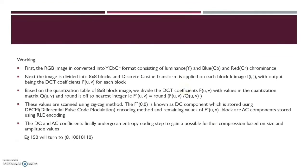Working: firstly, the RGB image is converted into YCbCr format, which consists of luminance, chroma blue and chroma red. Next, the image is divided into 8x8 blocks and discrete cosine transform is applied on each block to get f(u,v) for each block. Based on the quantization table, the 8x8 block DCT coefficient f(u,v) is divided by the values of the quantization matrix and rounded off to the nearest integer, receiving f-bar(u,v). These values are scanned using the zigzag method. The f-bar(0,0) is the DC component, stored using differential pulse code modulation encoding. The remaining values are AC components encoded using run length encoding. The DC and AC components finally undergo entropy coding to gain further compression based on size and amplitude values.